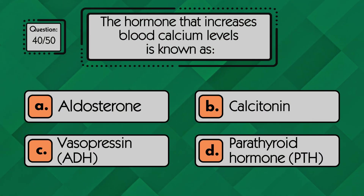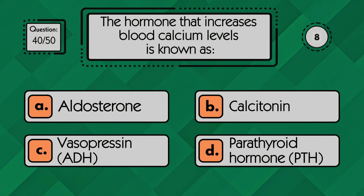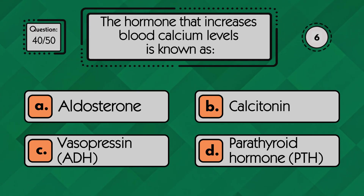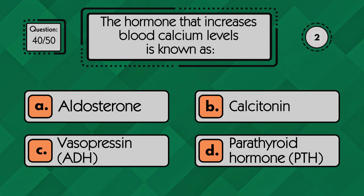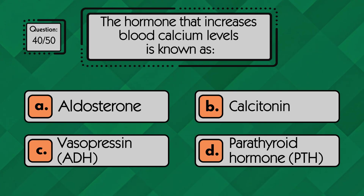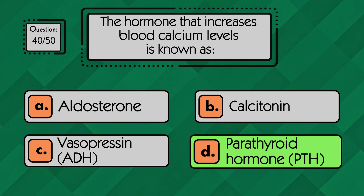The hormone that increases blood calcium levels is known as… The hormone that raises blood calcium levels is parathyroid hormone.